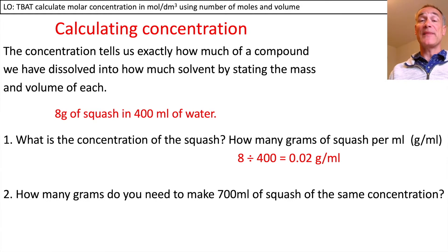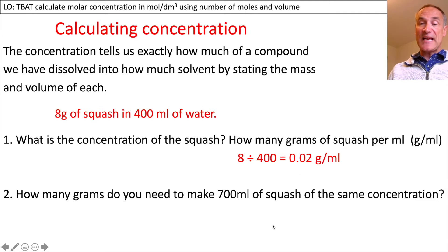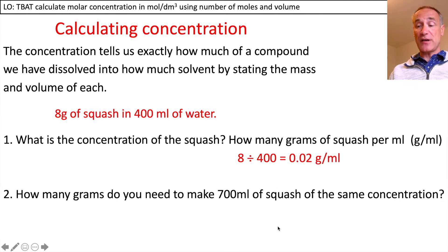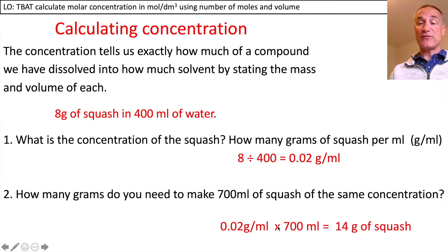So how many grams would you need to make 700 millilitres of squash of this concentration? Well, if each millilitre needs 0.02 grams of squash and we've got 700 millilitres, then we just multiply by 700 and that means we need 14 grams of squash.